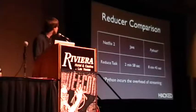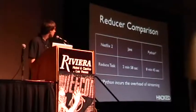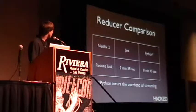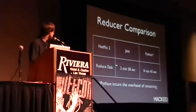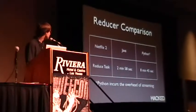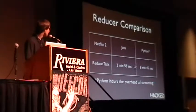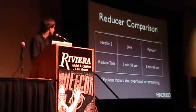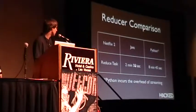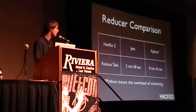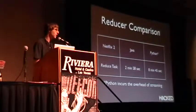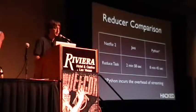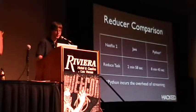Here's a reducer comparison: Java running in 2 minutes and 58 seconds, Python running in 8 minutes and 45. You can see there's a decent amount of overhead that you incur using the streaming interface.